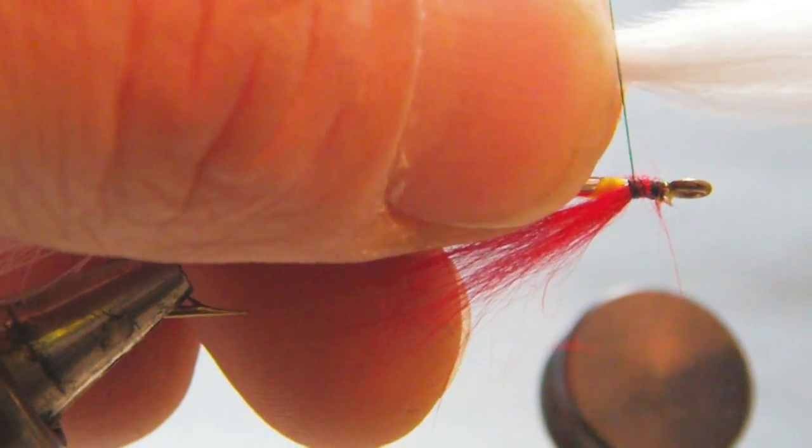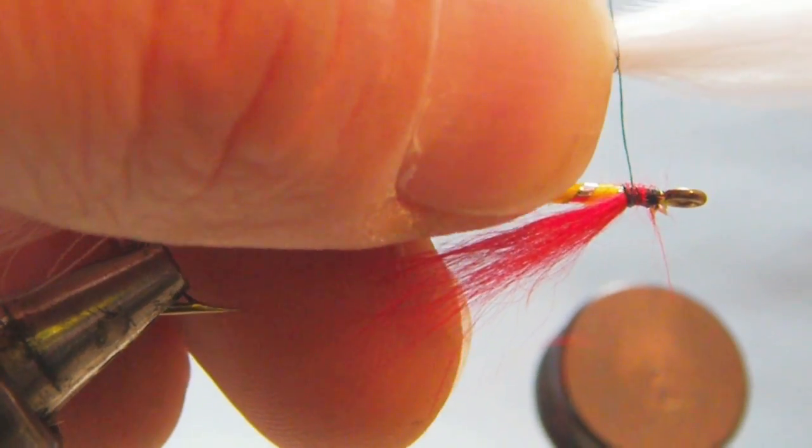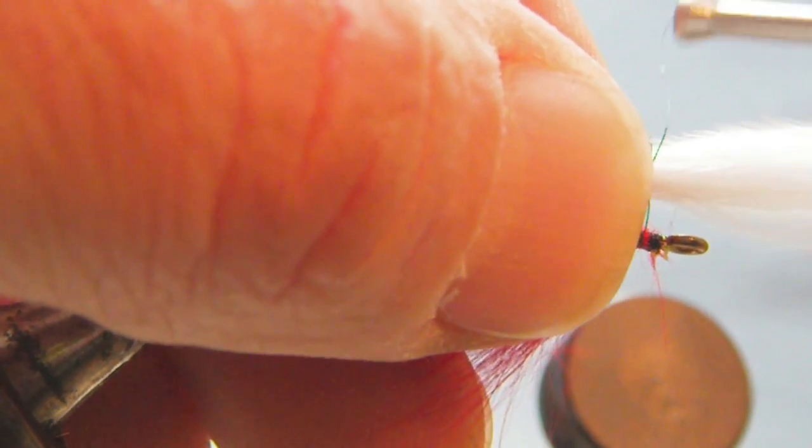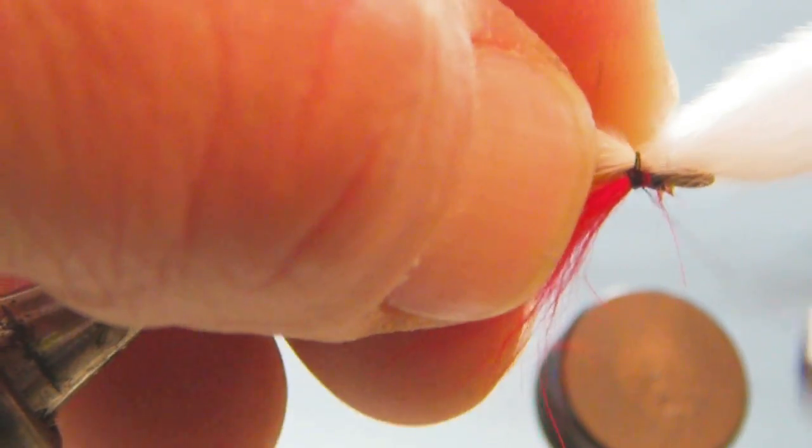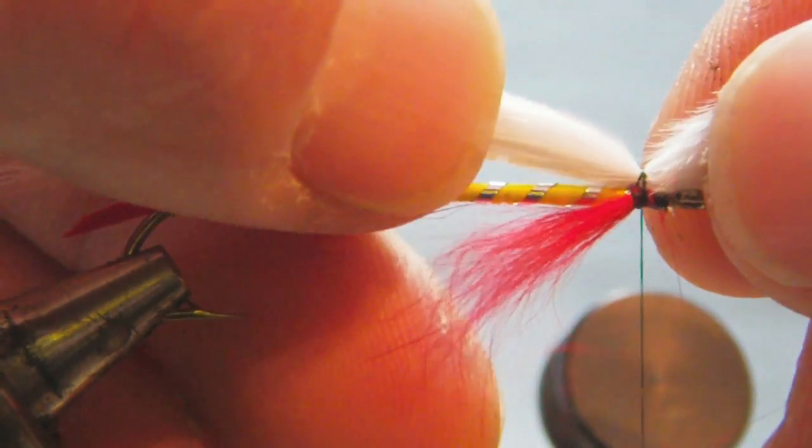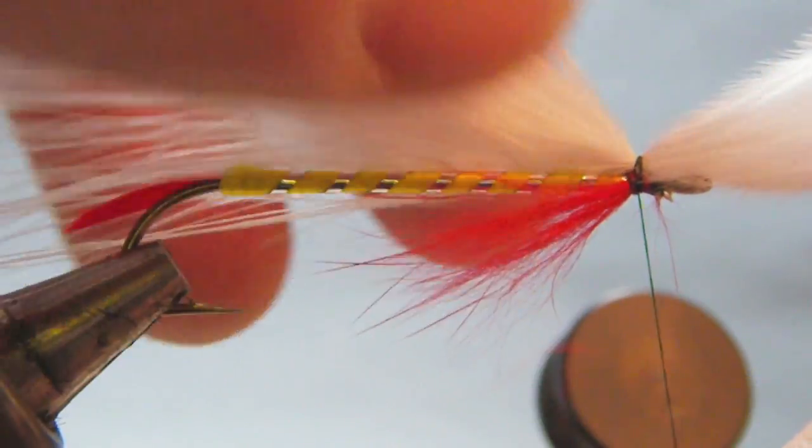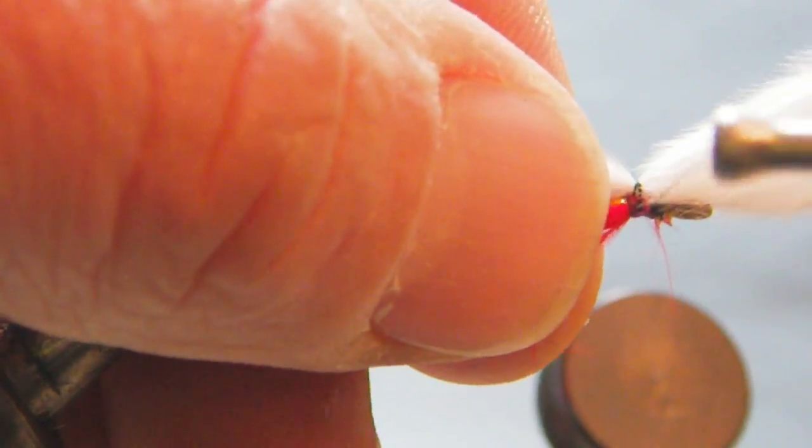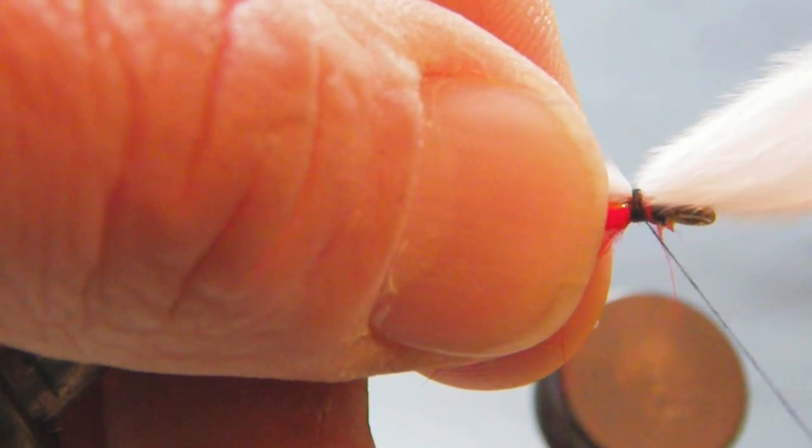Then I'll take my thread, and I'll do one wrap loosely around it, and then as I pull back and pull down tightly, it'll separate it from the red. That way you can see the yellow in the uni-stretch.